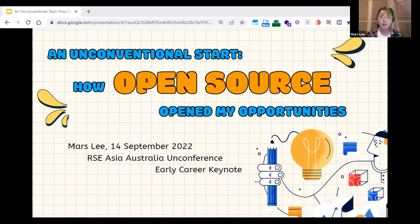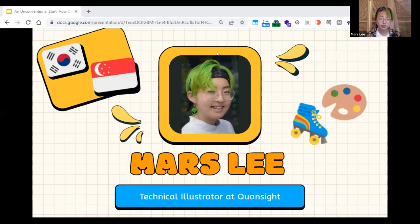Hi, everyone. I'm Mars, and I am one of the speakers for RSC's Asia-Australian Conference Early Careers Keynote. My keynote is about my unconventional start, how open source opened my opportunities. A very quick introduction: I am Mars Lee. A short visual description of myself for the visually impaired: I have green hair, I'm wearing this cool star bandana, and I got a dangly earring. It's actually a kit. I'm a technical illustrator at Quonsight. I'm from South Korea and grew up in Singapore. And fun fact, I roller skate.